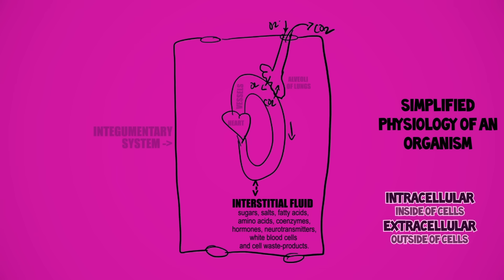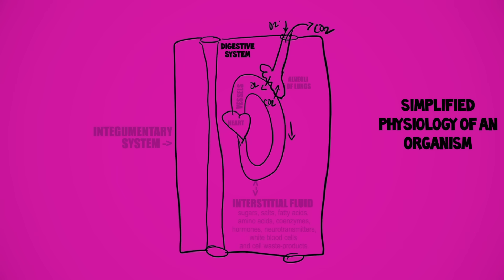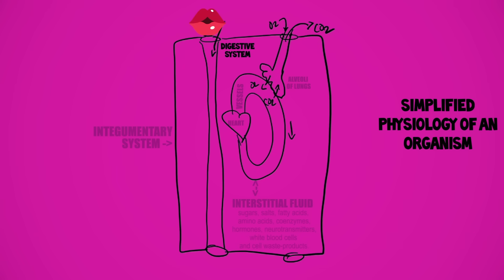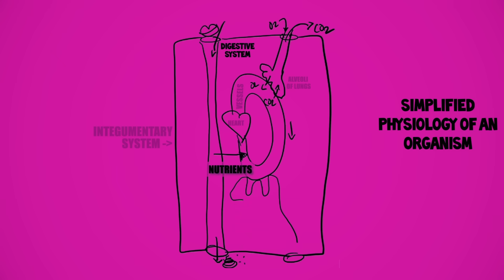Speaking of nutrients, let's look at the digestive system — it's basically a long tube from the mouth to the anus. The circulatory system receives nutrients that are broken down via catabolism into small enough molecules to pass. At the anus, we excrete the unabsorbed matter as waste. One last thing to add is the urinary system — it's going to filter the blood and excrete nitrogen-containing metabolic waste products via the urine.